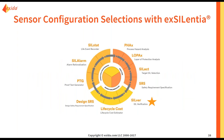We would do this in the SIL verification tool in Excellencia, which we call SILVER. In SILVER, what you are doing is choosing your equipment for each part of your SIF — your sensor, your logic solver, and your final element — but you are also indicating how it is going to be configured within your system. I am going to show you how you can do that for the sensor.